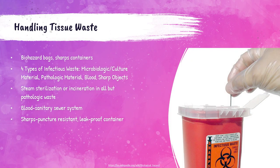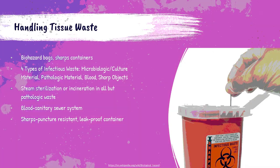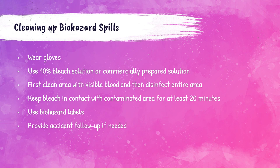Biohazard bags and sharps containers must be utilized appropriately. There are four types of potentially infectious waste in the lab: microbiologic or culture material, pathologic material, blood, and sharp objects. All of these can be steam sterilized or incinerated, except pathologic waste, which must be incinerated. Pathologic waste is any human or animal body part. Blood may be disposed of in the sanitary sewer with copious amounts of water. Any sharps — glass, needles, blades — must be disposed of in a puncture-resistant, leak-proof container labeled with a biohazard identification.